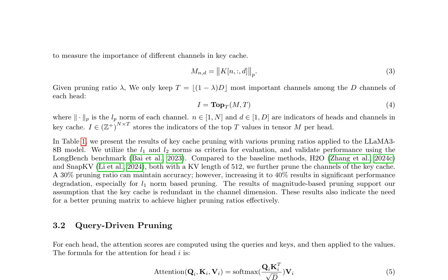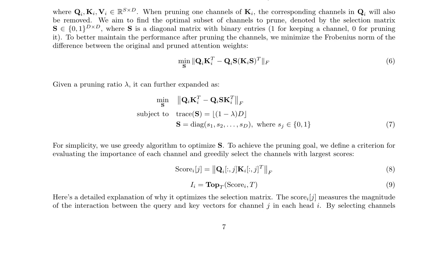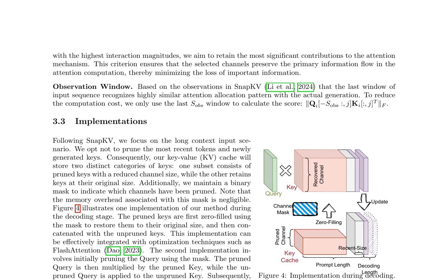The magnitude-based method uses the L1 and L2 norms to evaluate channel importance, while the query-driven method aims to minimize the Frobenius norm of the difference between original and pruned attention weights. The authors also introduce a criterion for evaluating channel importance based on the interaction magnitude between query and key vectors. A 30% pruning ratio maintains accuracy, but increasing it to 40% results in significant performance degradation, especially for L1 norm-based pruning. The authors discuss the implementation of their method during decoding, focusing on long-context input scenarios.